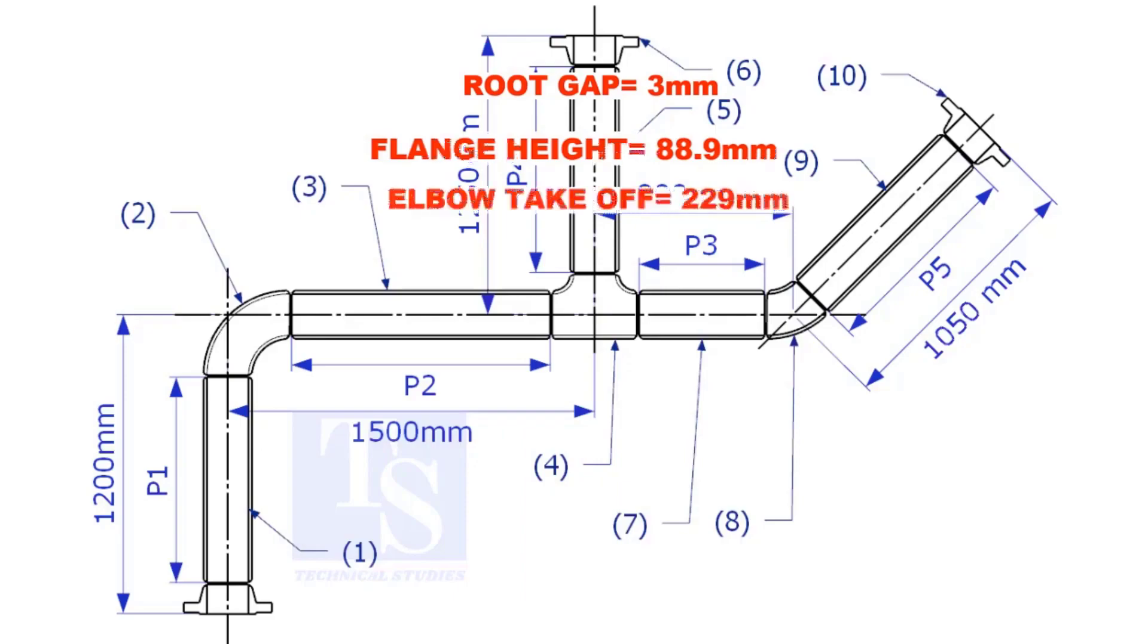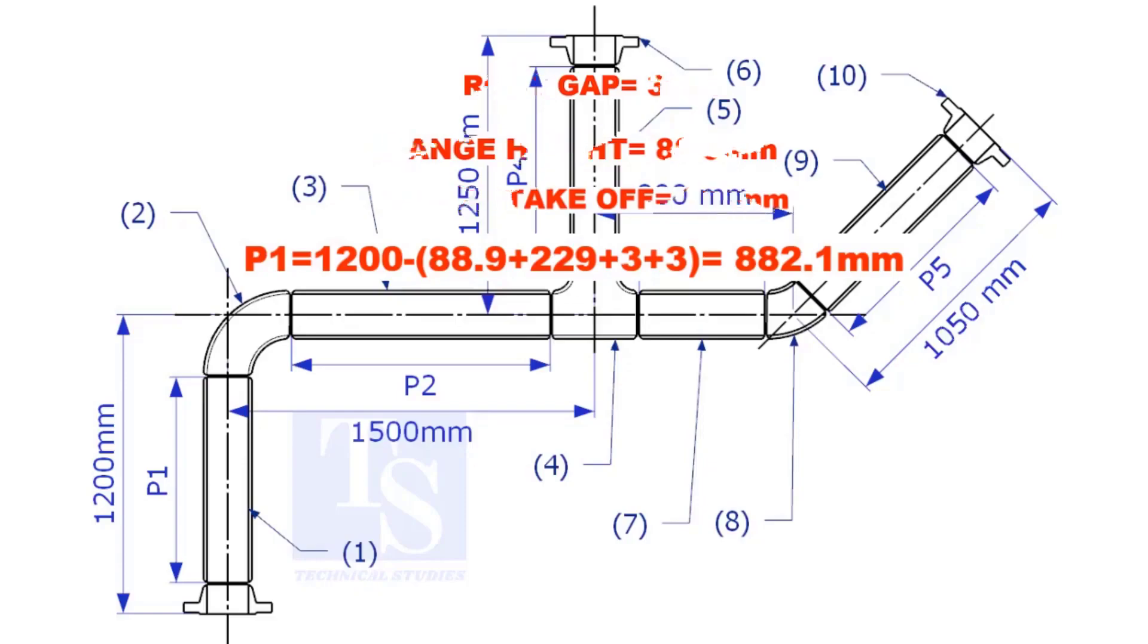Substitute the sum of the height of the flange, elbow takeoff, and two root gaps from the total length of 1500. Length of pipe P1 is 882.1mm.